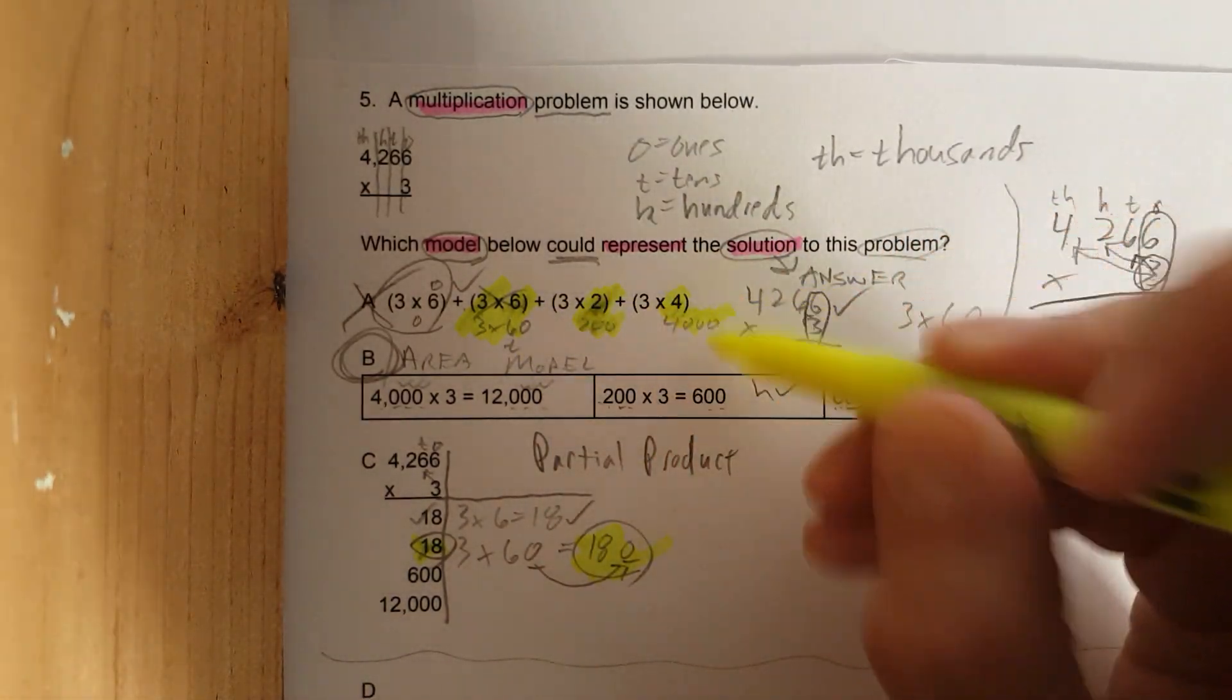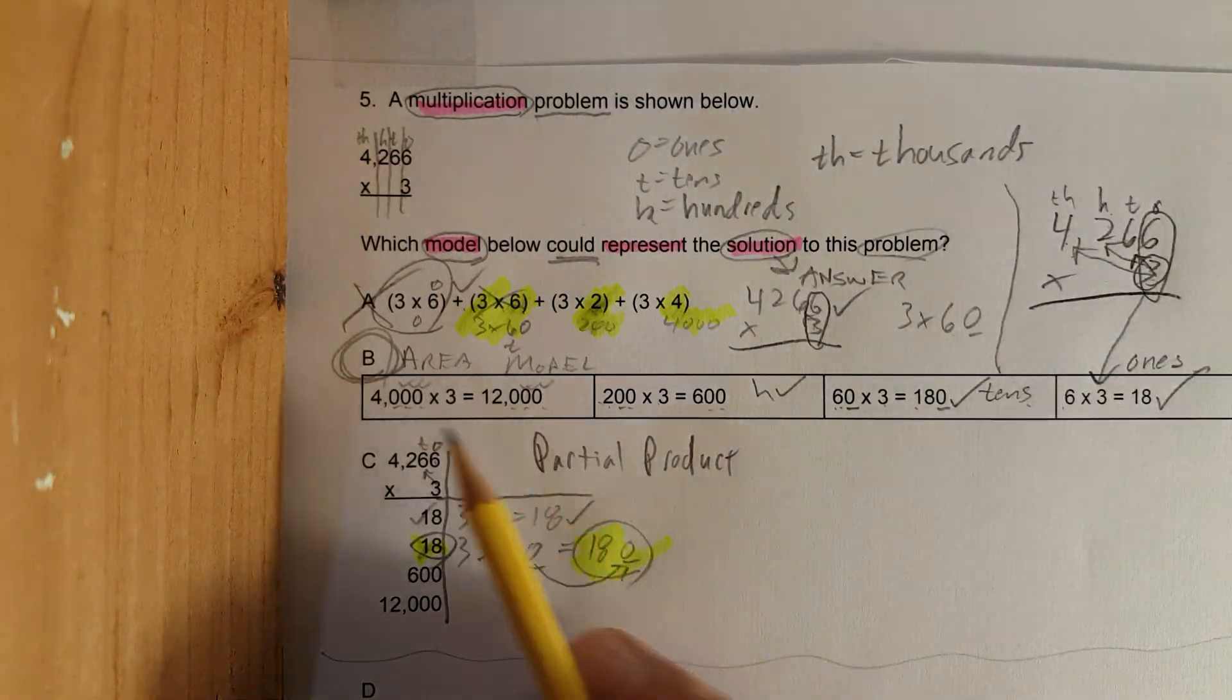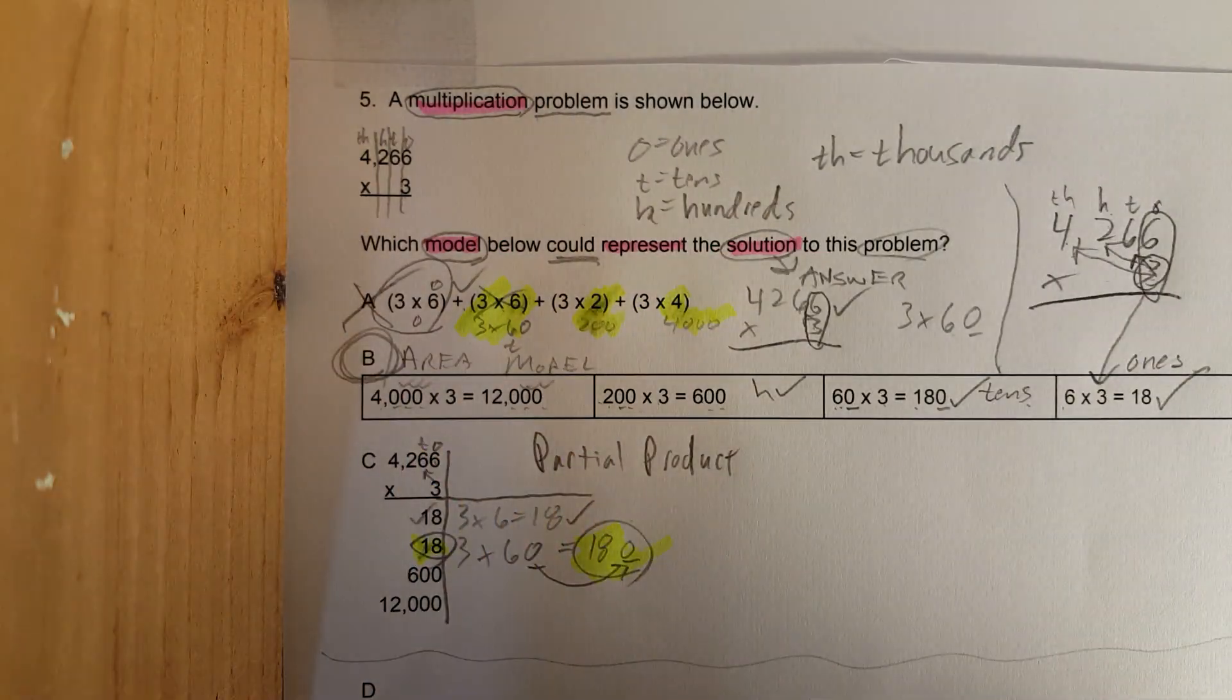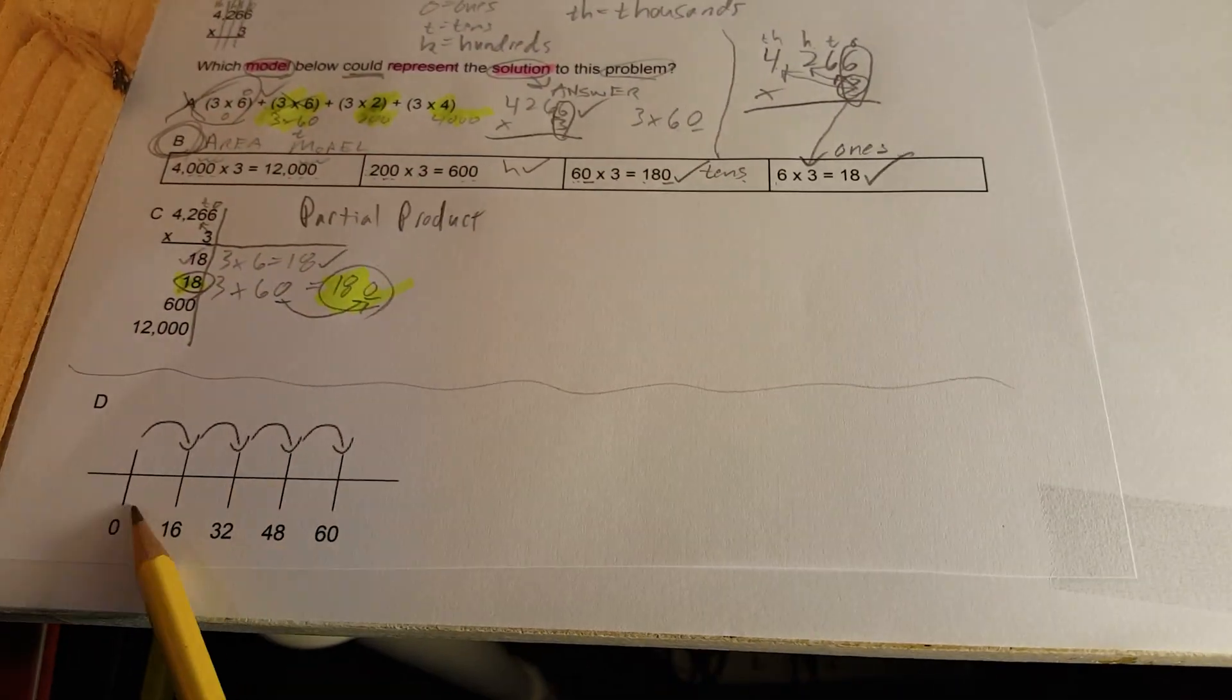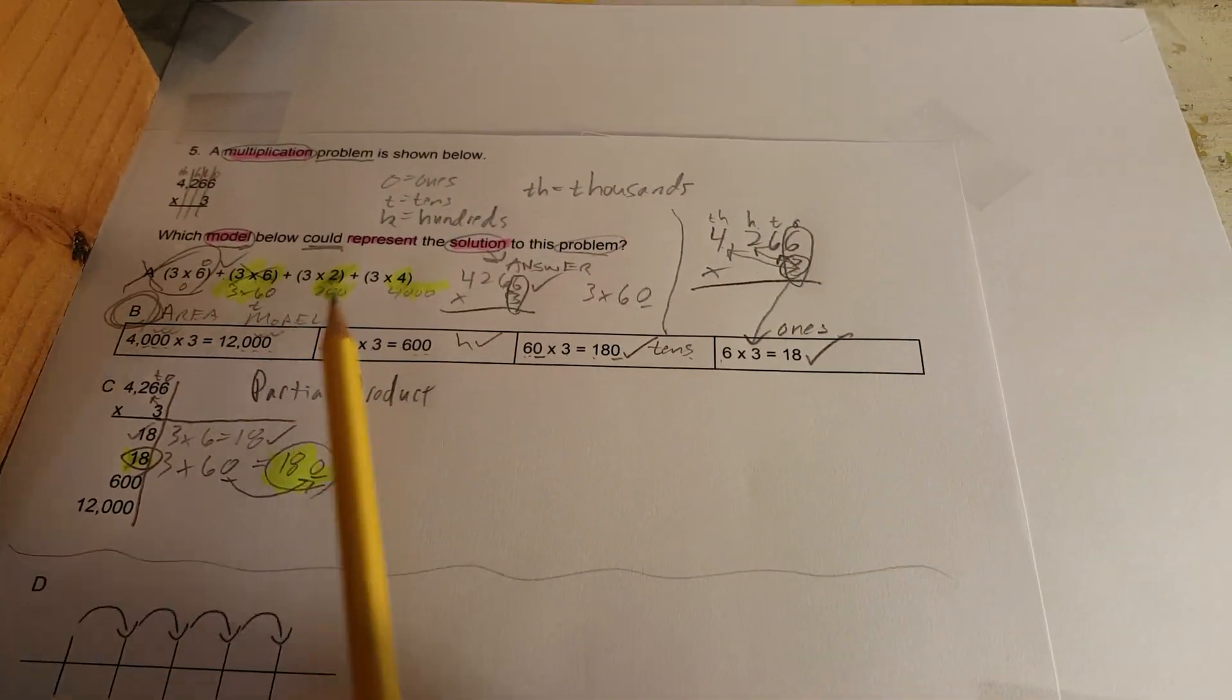So it's not C. Correct answer is B. Now if you want to see what D was, look at D. Number line, and it's jumping sixteen every time. That is nowhere close to that problem. What is going on with this? So let's just get rid of that right away.